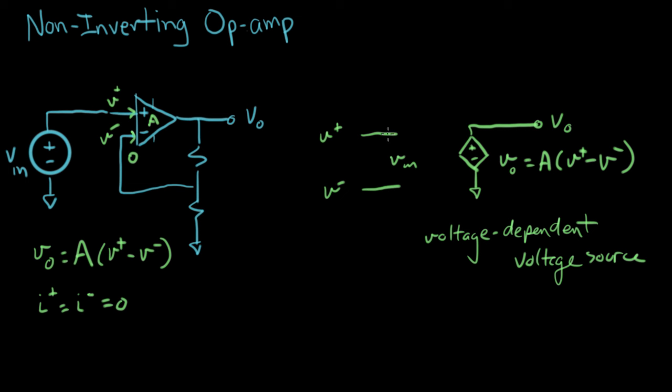So we've just taken our gain expression here and drawn a circuit diagram that represents our voltage expression. Now specifically over here, we've drawn an open circuit on V plus and V minus, so we know that those currents are zero. So this model represents our two properties of our op-amp.